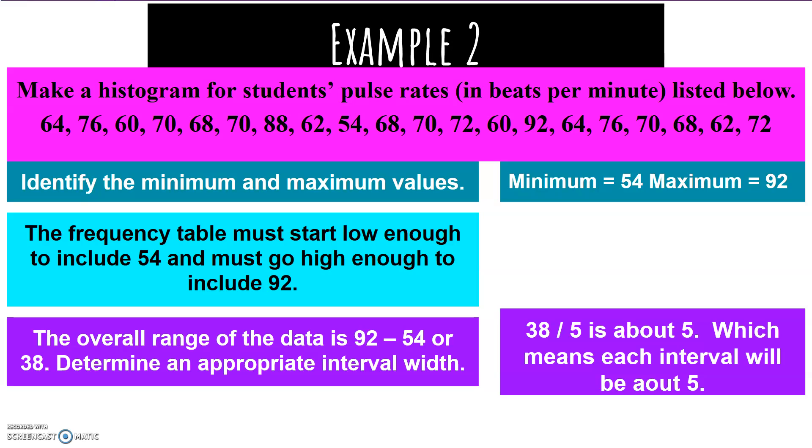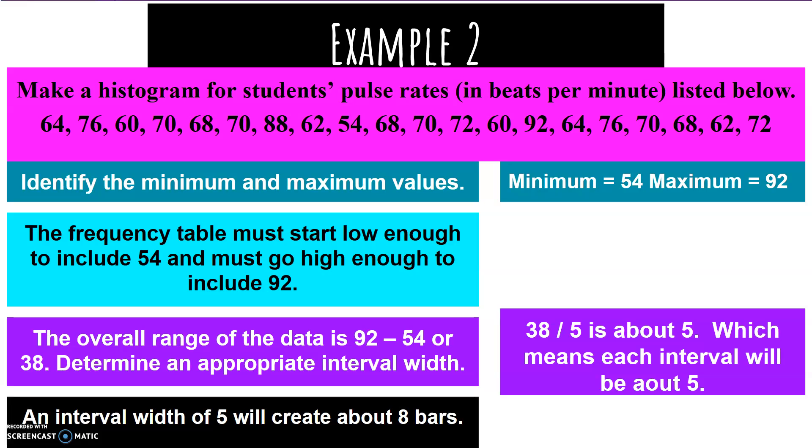38 divided by 5 is about 8. 38 divided by 8 is about 5. We're going to split our intervals into groups of about 5, and we will have 8 of them, which is between 4 and 12, so perfect. An interval width of 5 will create about 8 bars.